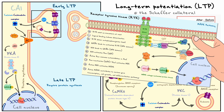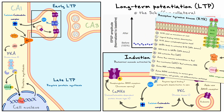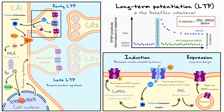With sufficient protein synthesis in late LTP, it can eventually lead to the formation of new synaptic contacts, which again will increase the strength of the connection, but now for larger timescales — days, months, or years. Now that we have a good idea of how LTP occurs at the Schaffer collateral, I want to establish some properties that LTP at this synapse has, because they are relevant in the grand scheme of plasticity and memory.